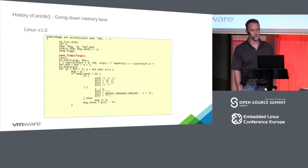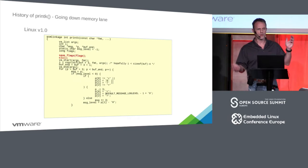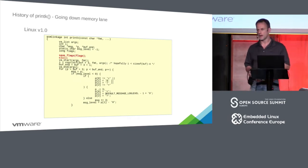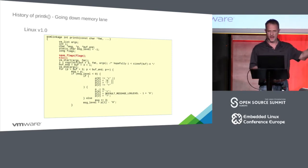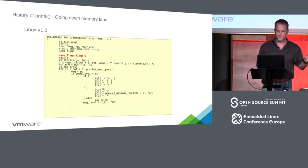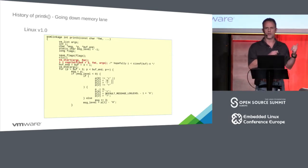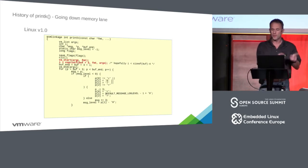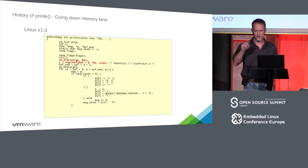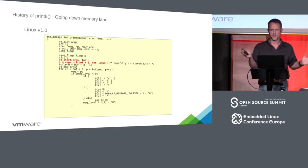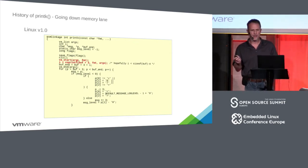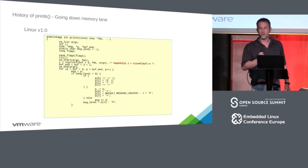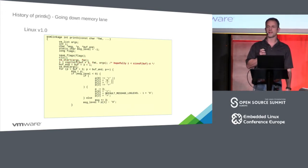The first thing that happens is you check whether interrupts are on or off. You save that in a flags variable with save_flags, then you clear interrupts. This is actually familiar code you've probably seen in user space. The vsprintf is implemented in the kernel — there's no library there. The VA start is a compiler thing, but vsprintf has to be implemented. It's kind of strange because you look at the buff plus three.